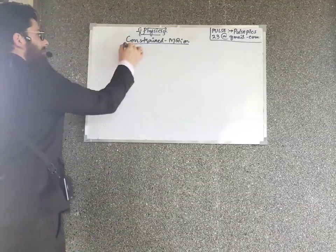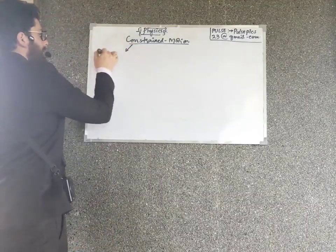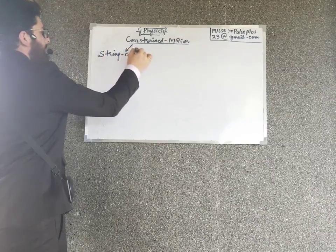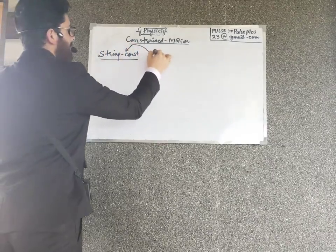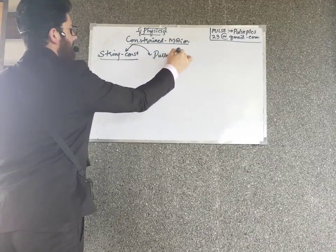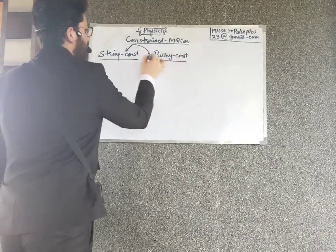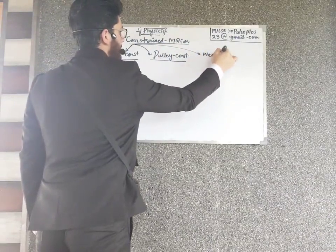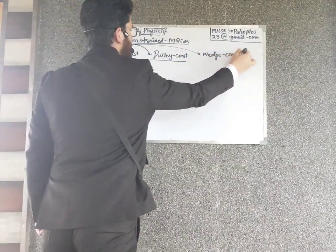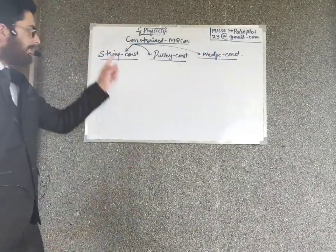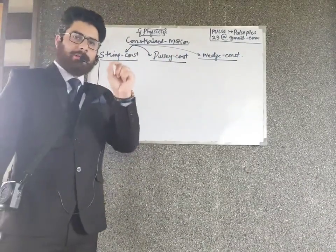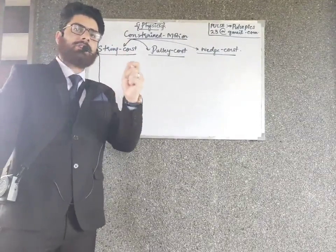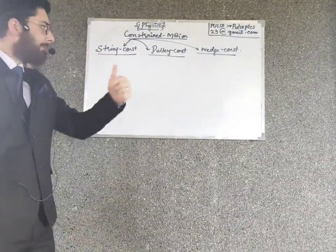It is of three types. The third one will be about wedge constraint. But in these three cases, we can ask questions. In each case, the constraint we apply — how do we apply it, and how do we use that in problems?